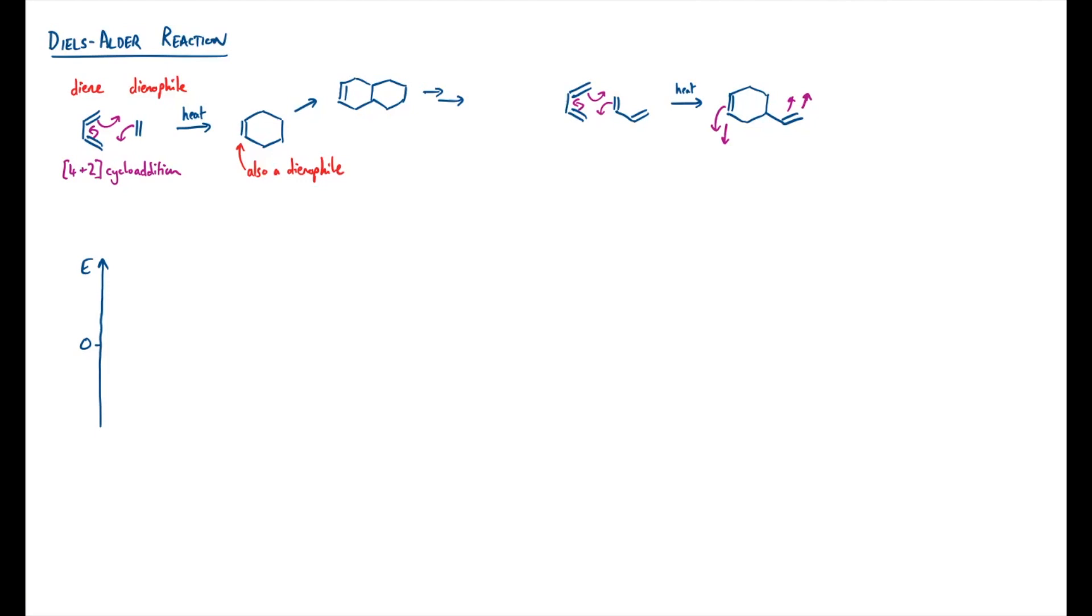Now we can have a think about the pi molecular orbitals here to help us out. For the diene, we'll have four pi molecular orbitals, two bonding type, one more so than the other, and two anti-bonding ones, one more so than the other again. It'll have four pi electrons, so we'll fill up these bottom two. The fully bonded one at the bottom has no nodes, and this next one up just has one node.